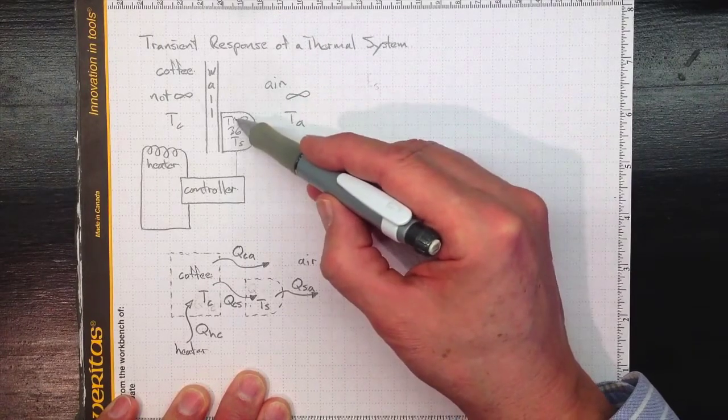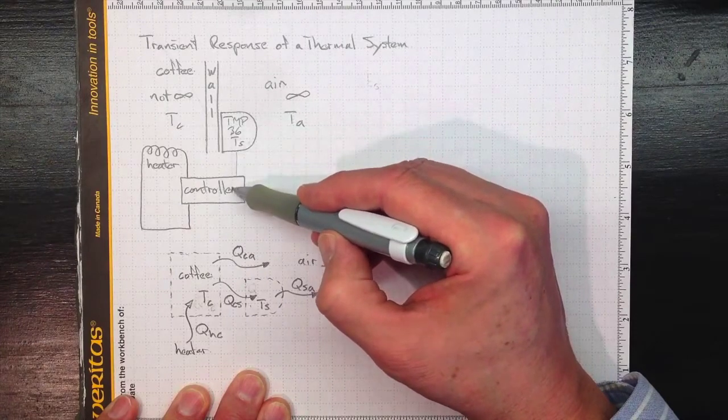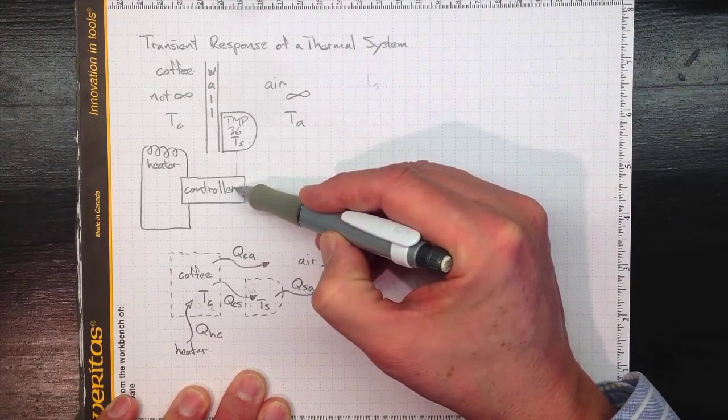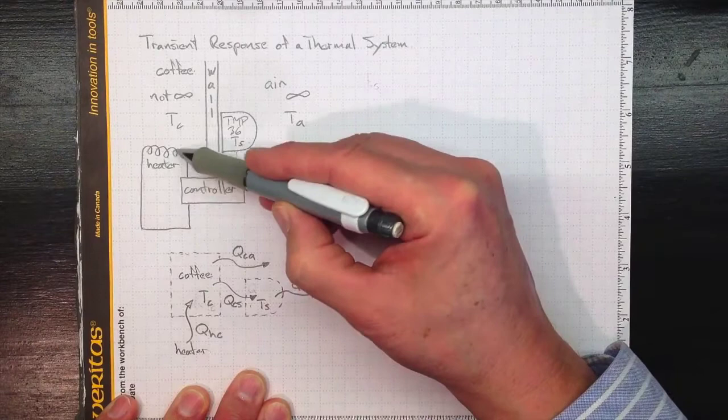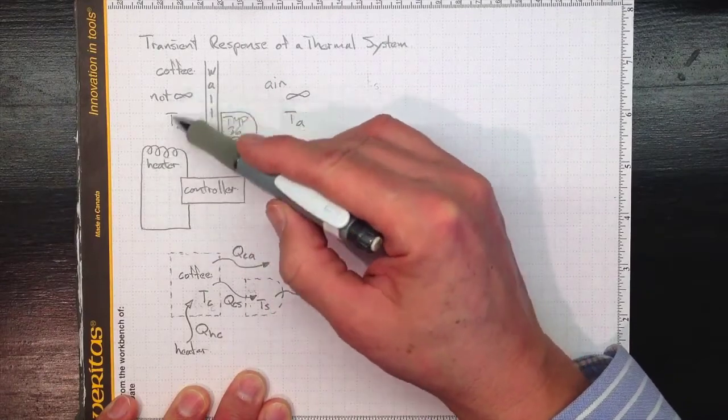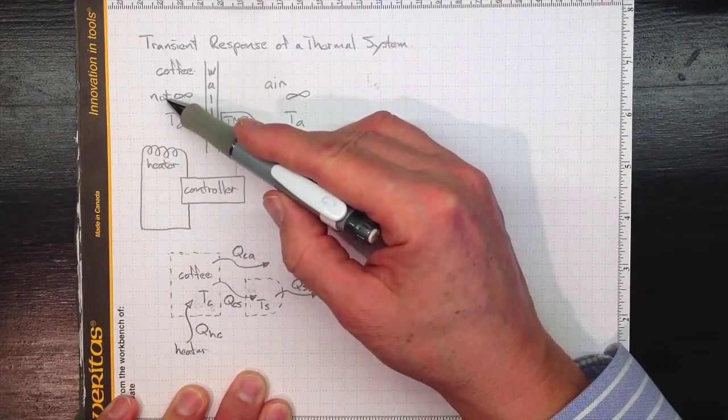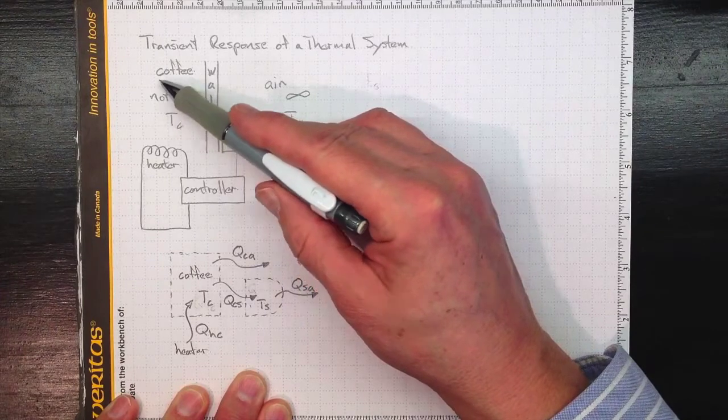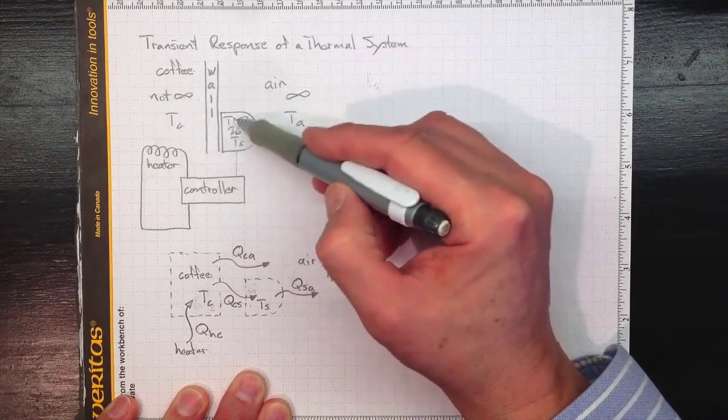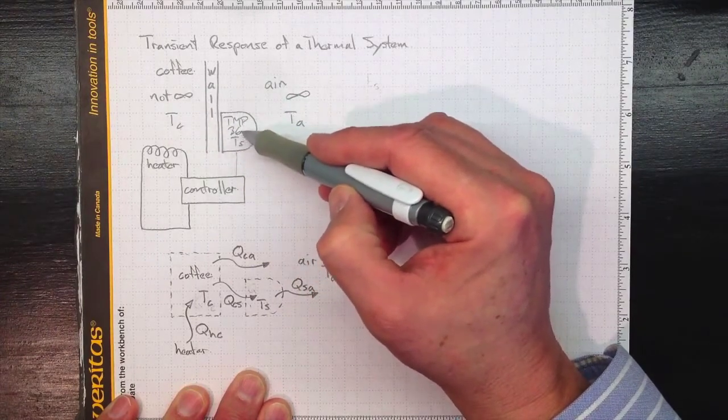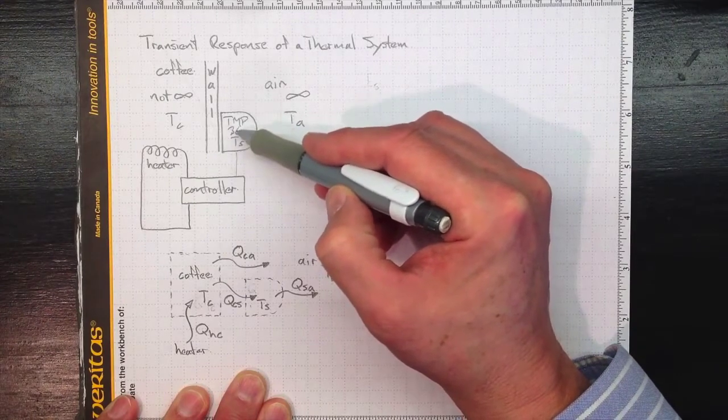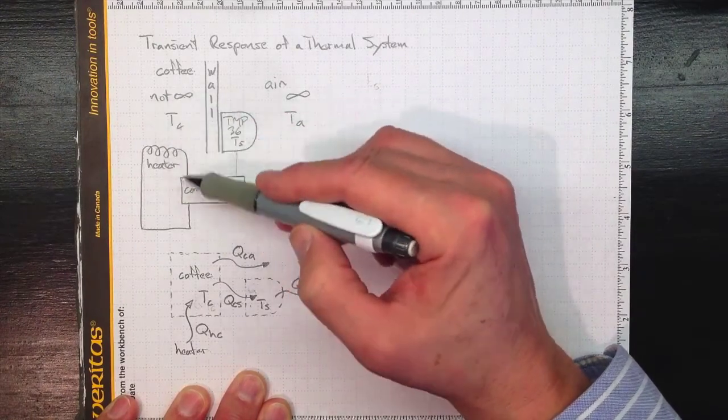This time though, our sensor we're reading the temperature with our microcontroller and using that microcontroller to turn a heater on and off to try to keep the coffee or the 3D printer bed or whatever warm enough to match a temperature that we'd like it to be at. And we're using the sensor input to control that heater and turn it on and off.